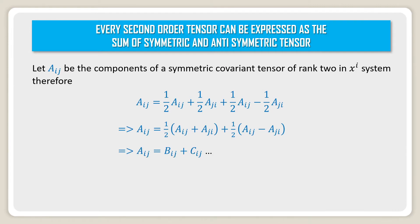This implies Aij = Bij + Cij, where Bij = (1/2)(Aij + Aji) and Cij = (1/2)(Aij - Aji).